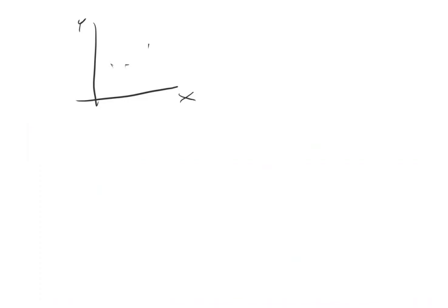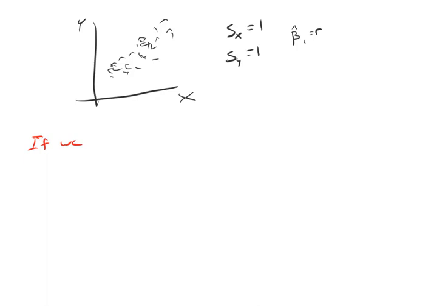This is how multiplying or increasing or decreasing the x or y variable by some factor changes the slope. Now let's think about this from the statistical standpoint. Suppose I have some data — x and y — and it just so happens that the standard deviation of x is 1 and the standard deviation of y is 1, which implies that the slope is exactly equal to the correlation, because sy over sx is exactly 1. Now suppose that all the y values are multiplied by 10.